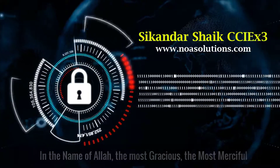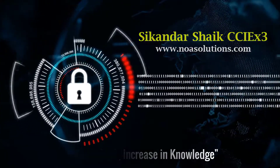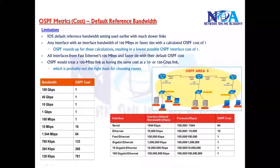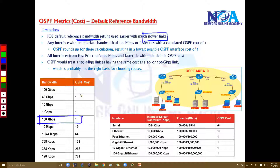Bismillahirrahmanirrahim. So one of the main limitations with the default reference bandwidth is that initially, when they started, this was very good with slower links. Even if your bandwidth is up to 100 Mbps, this is really good — the cost values it can extract go up to 100 Mbps.